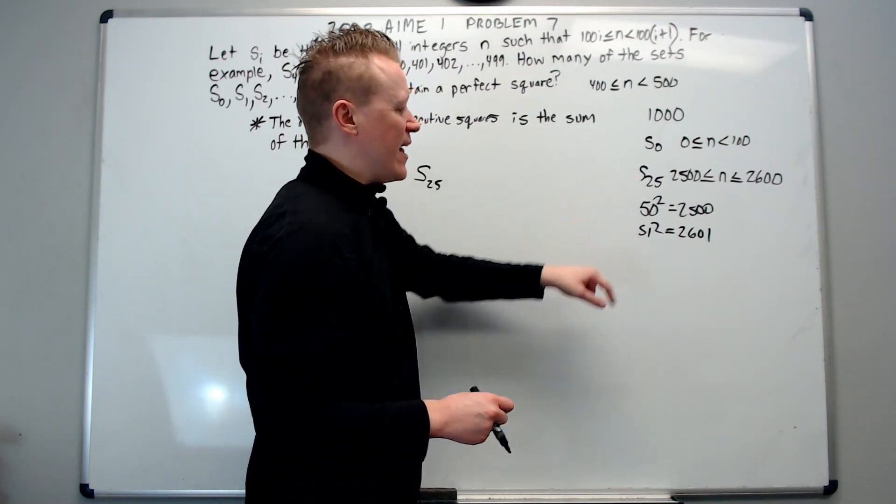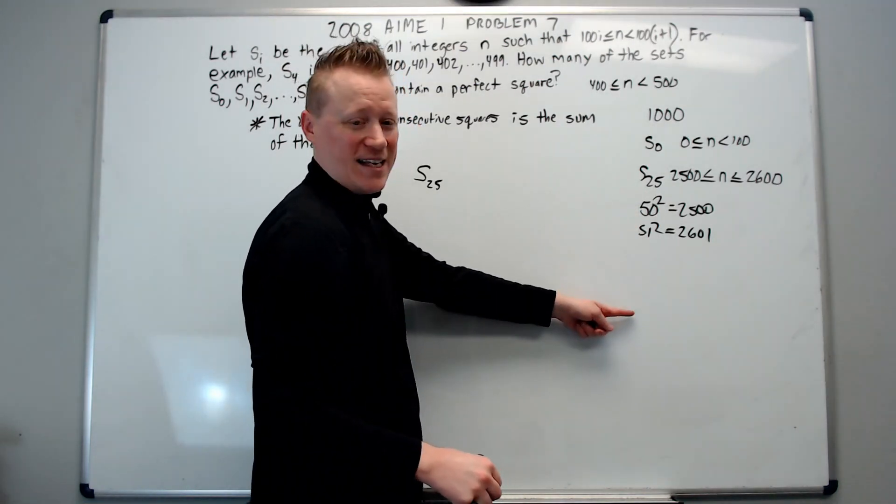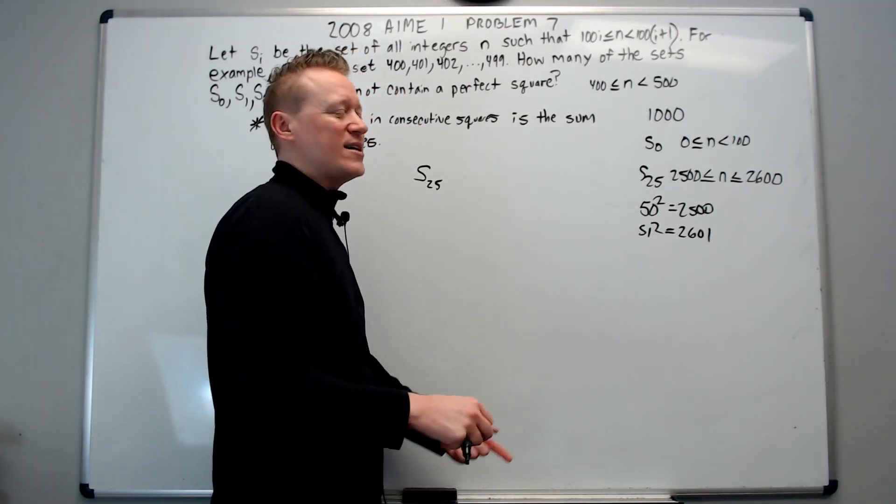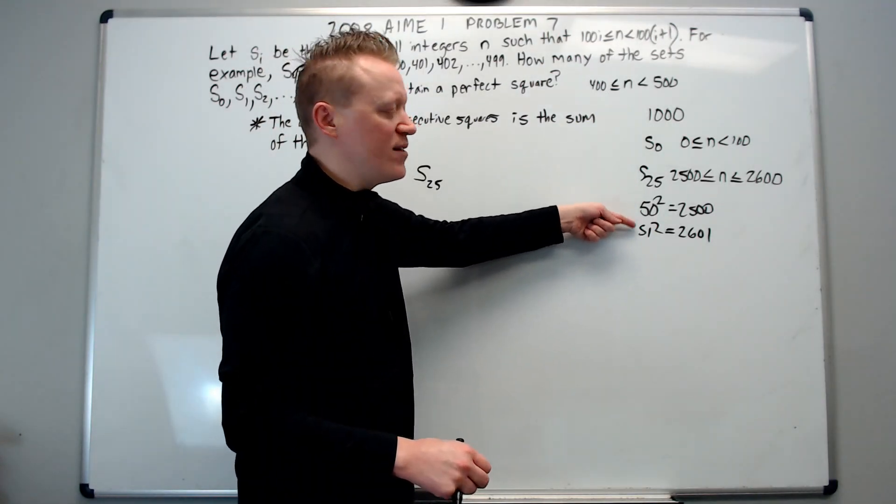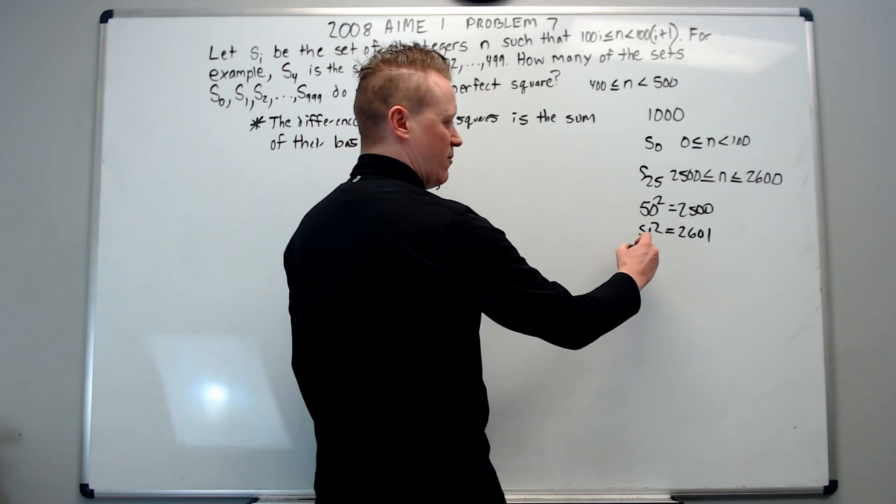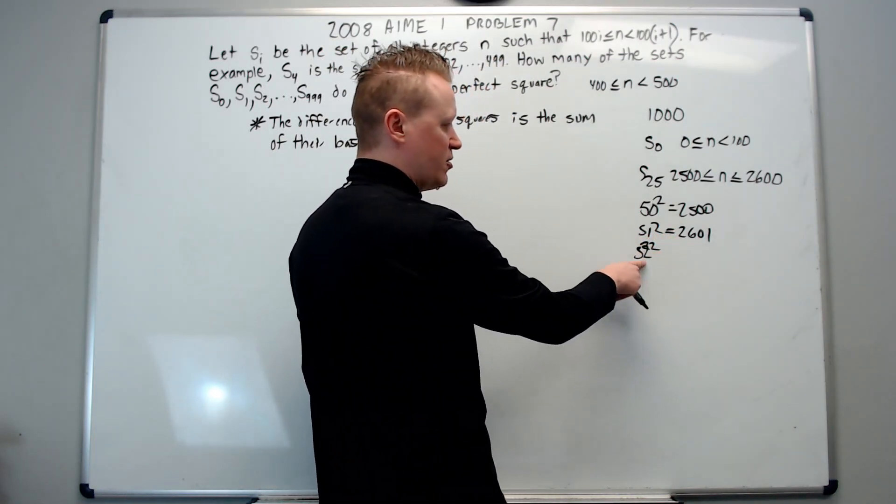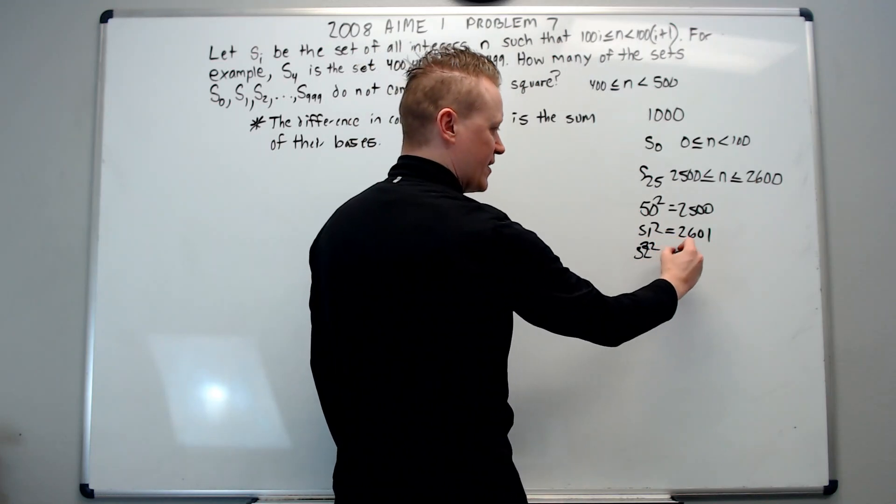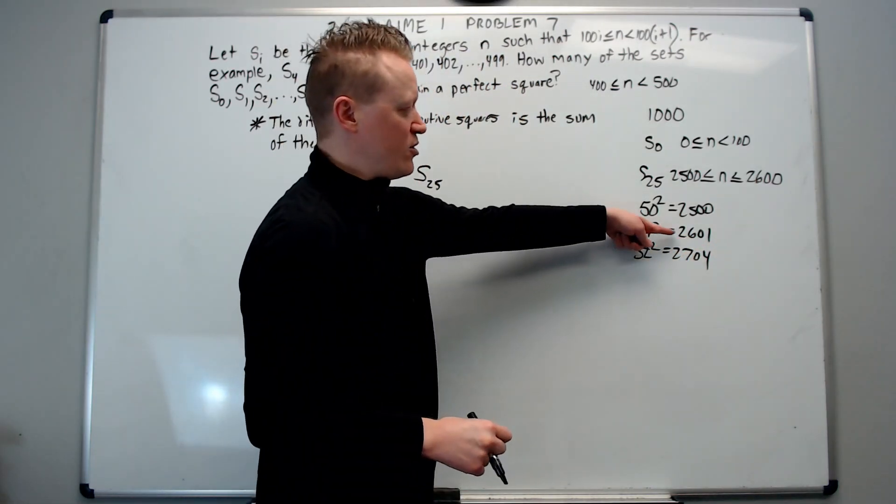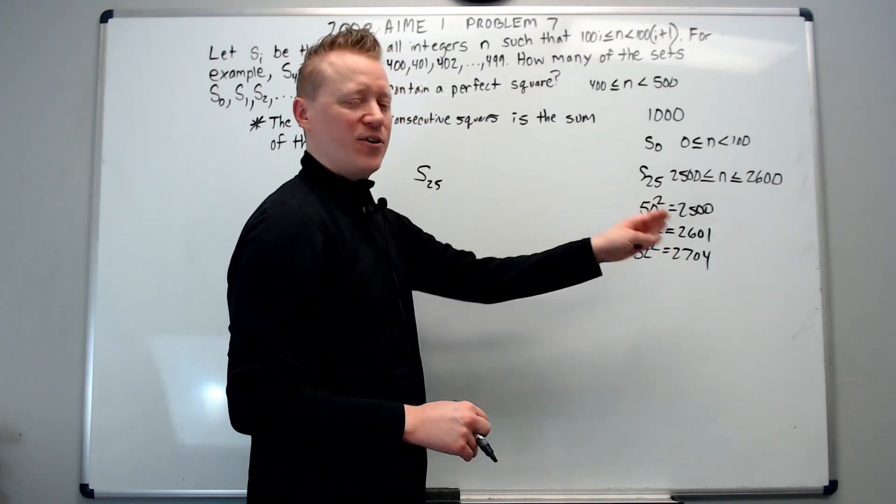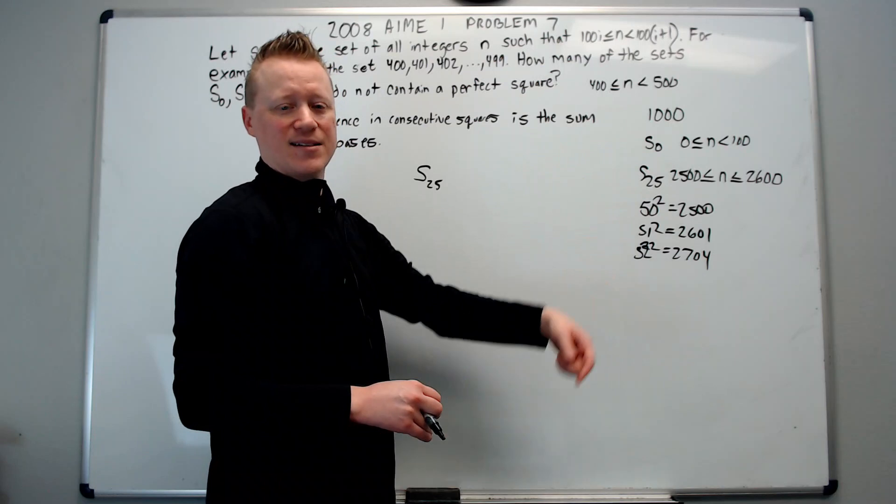And because of that, all of the perfect squares after 50, all of those are going to lie in a unique interval because they're more than 100 apart. So again, when we do 52 squared, 52 squared is 103 more than this. It's 2704. And so you can see they're all lying in a different 100 interval length, according to these sets of S.